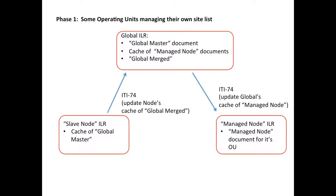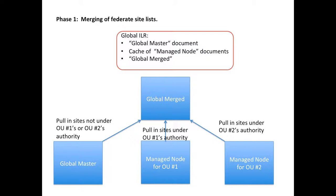In addition to the global master document from phase zero and the cache of these managed node documents in the global ILR, we will have a global merge document. What that does is pull in the operating units that are managed — their site lists — as well as fall back on the global master document for the ones that are not managed. For example, if we have two operating units managing their own site lists, that data is pulled into the global merge document, and then the global master is used for all operating units that are not number one or number two — basically all sites not covered under the top-level organizational hierarchy for those nodes.